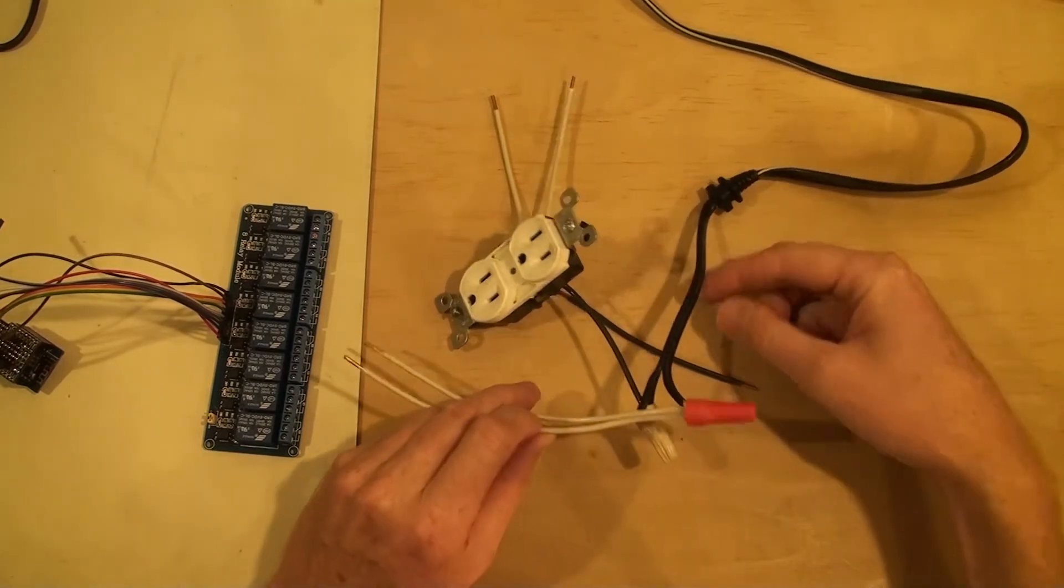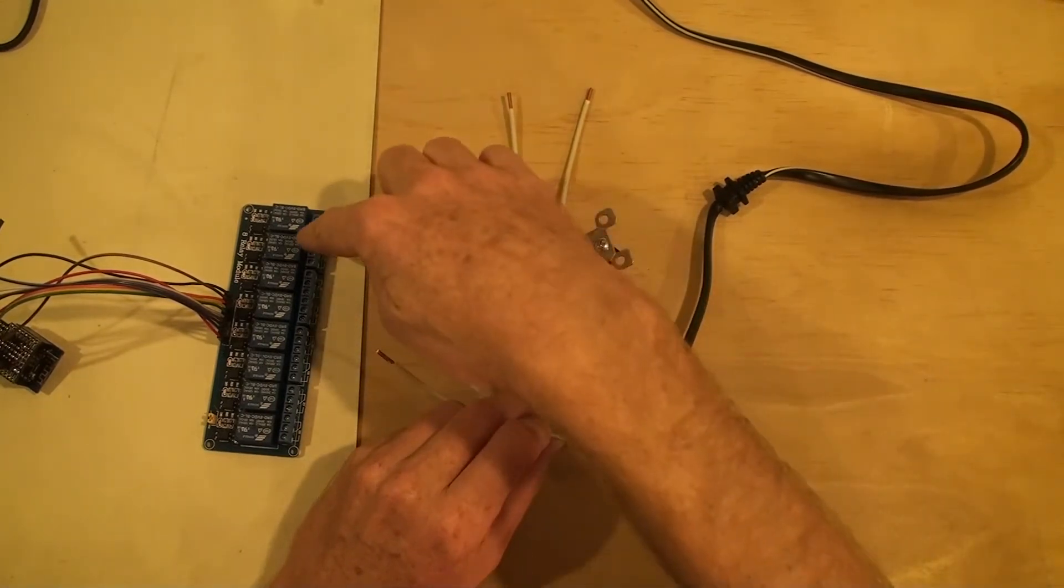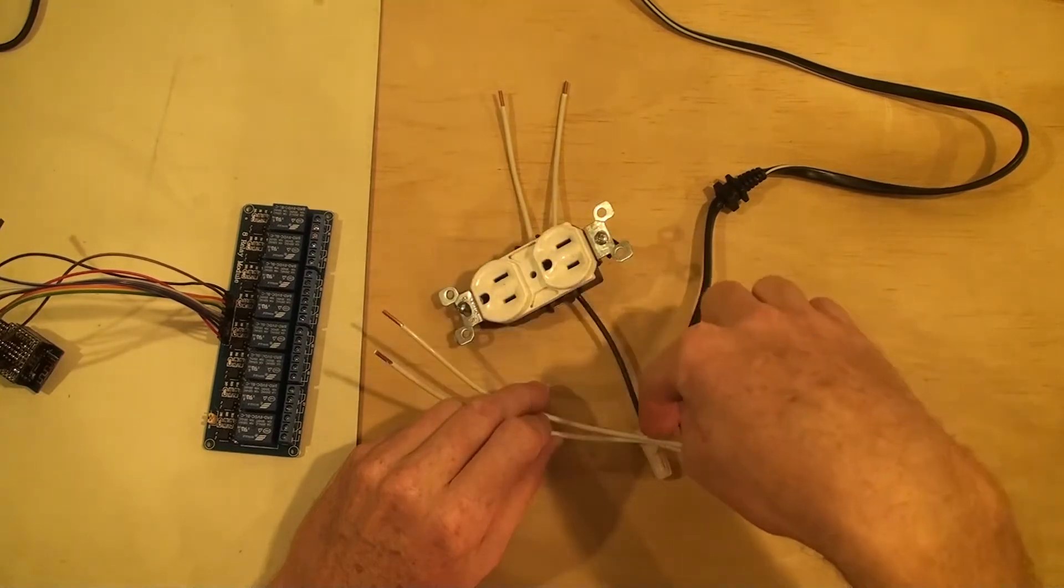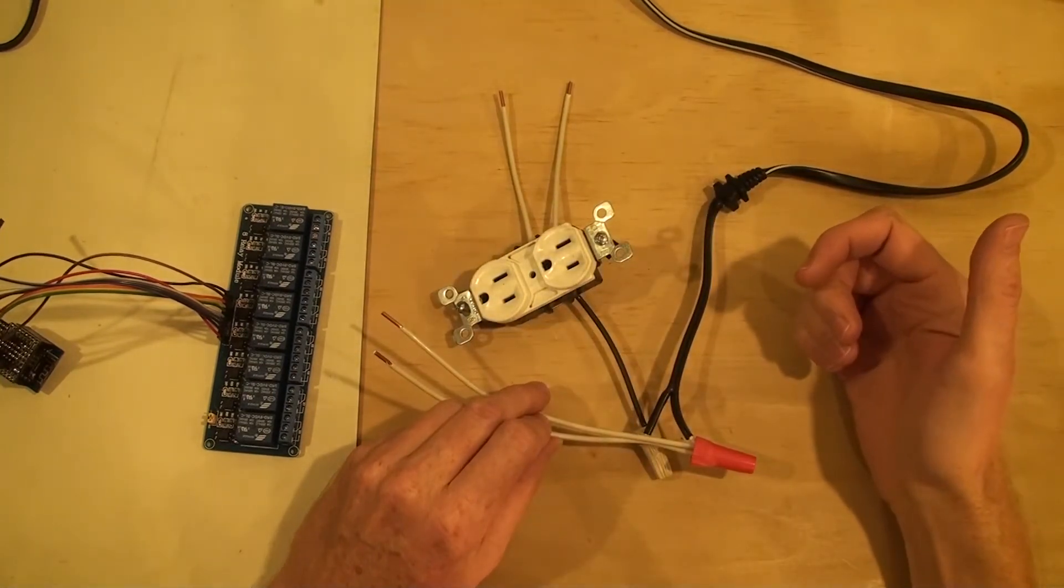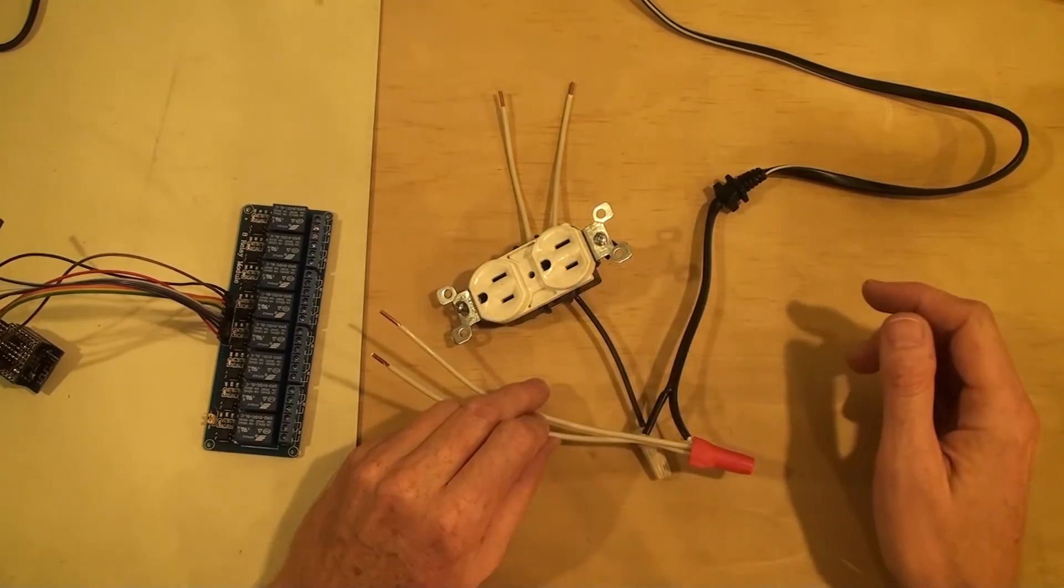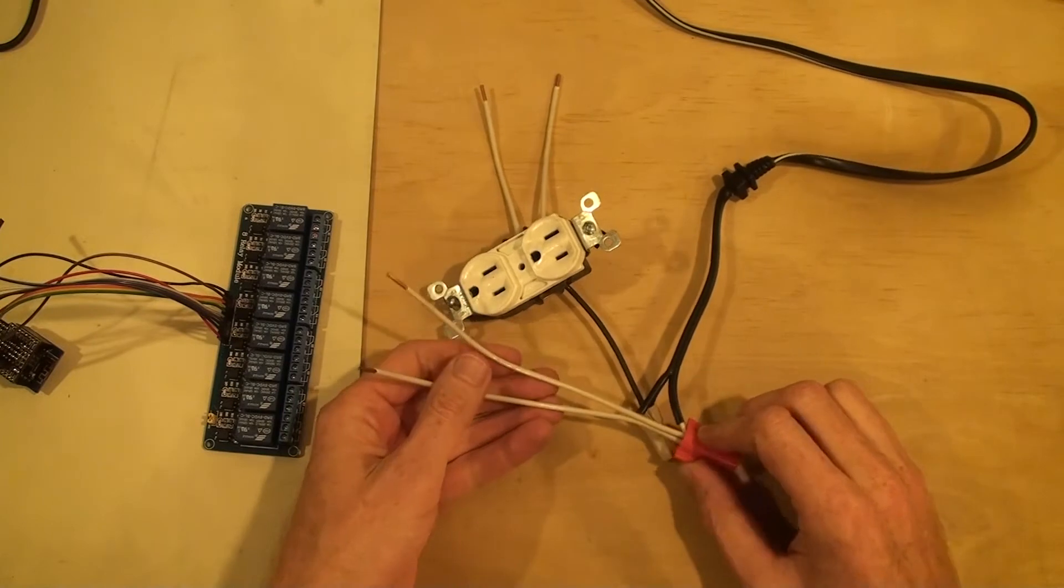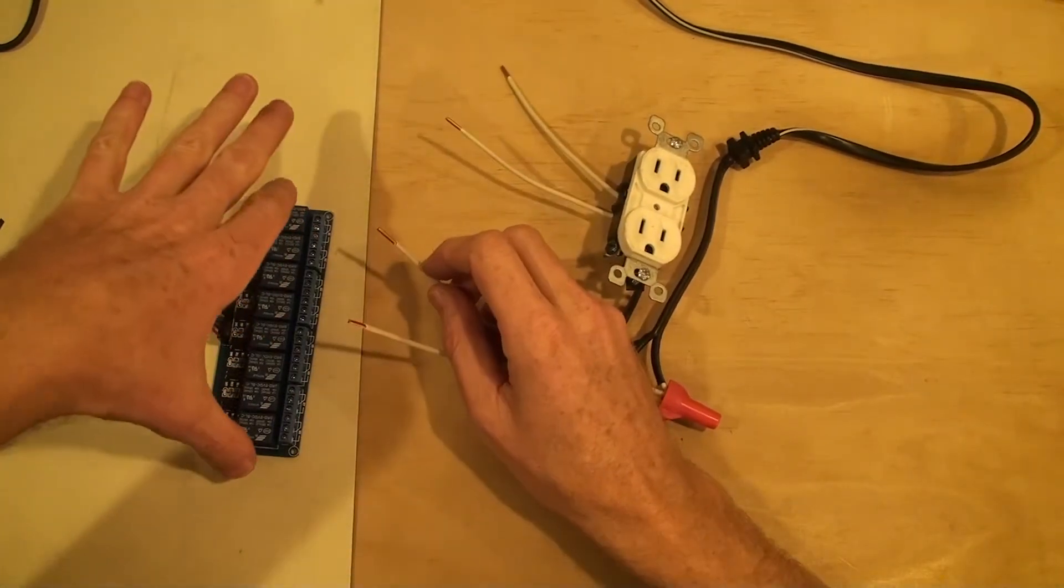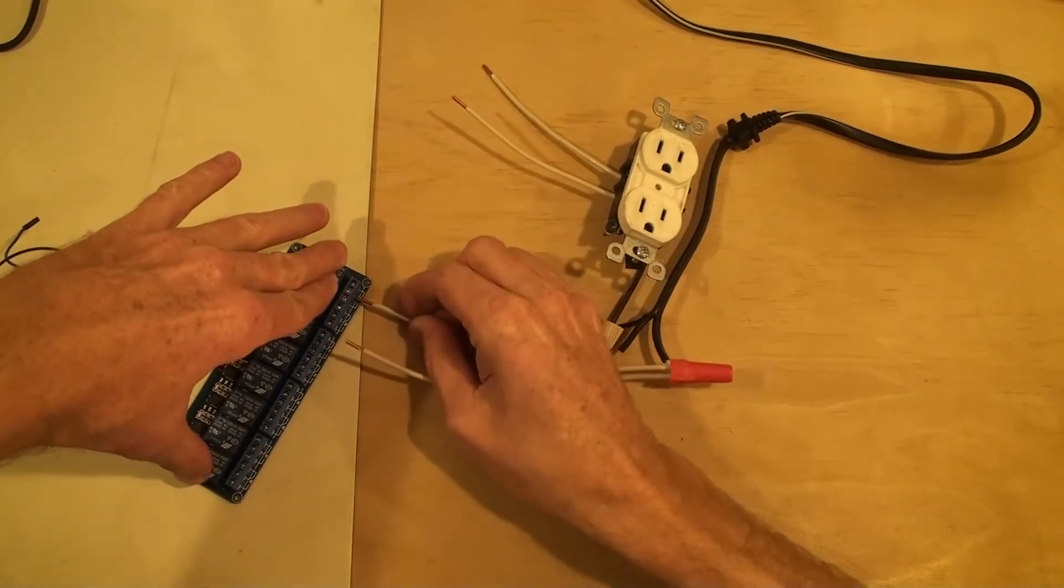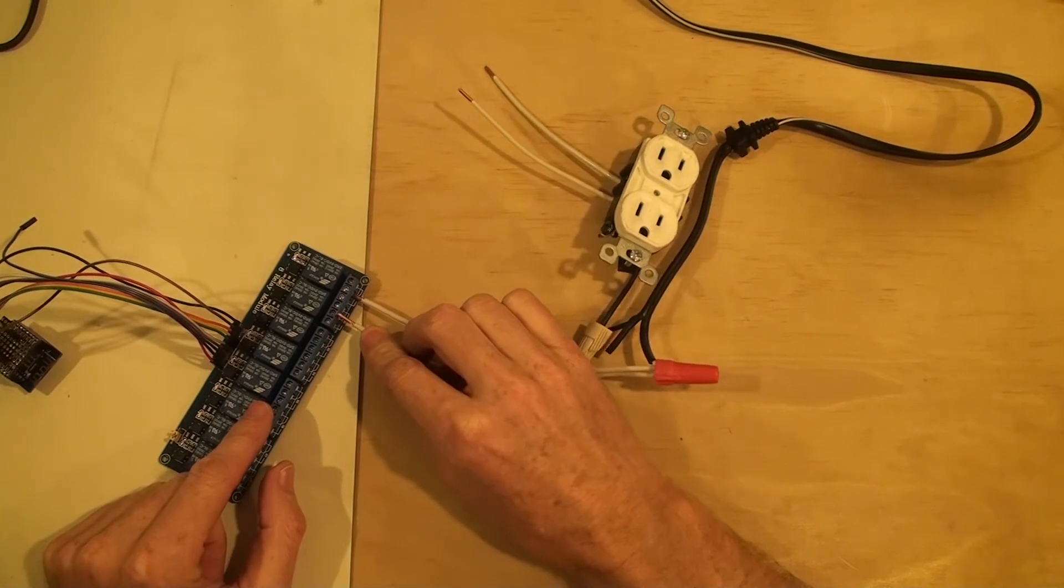And since we broke the tabs off here, we can switch each of these independently. So, what you wanna do is take and put this in the relay in the center, because this center one, we have three of these plugs for each relay. And you wanna put this in the center, and then you wanna put this one in the center here, which I need to grab a screwdriver. Now, I have the relays plugged in, so I'm gonna take this careful.